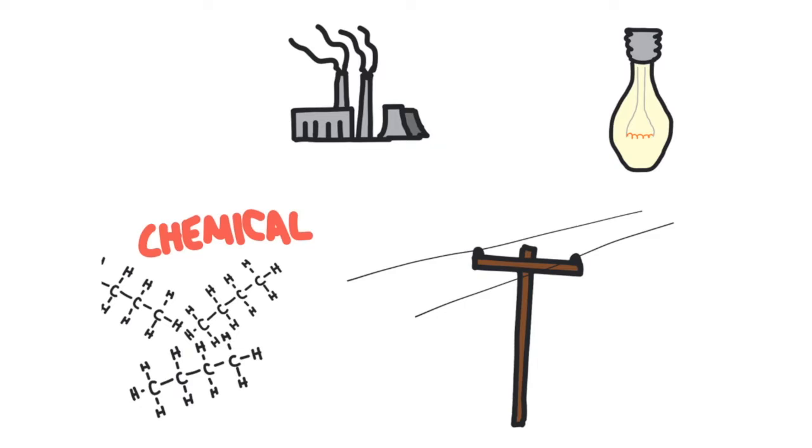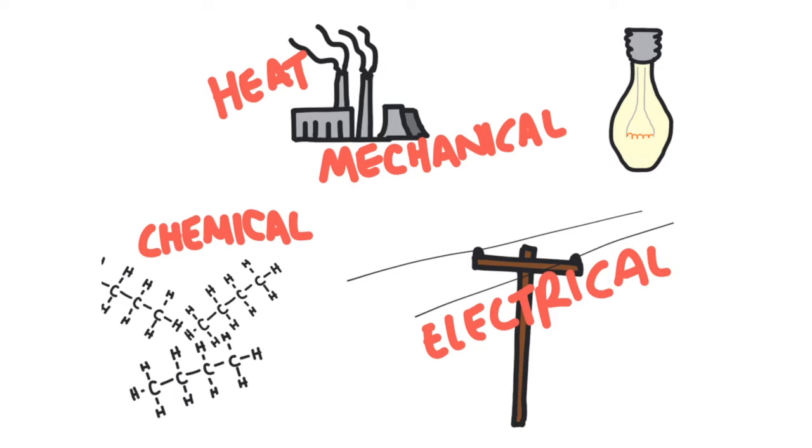Further down the line, those fossil fuels will be burned in a power plant to produce heat, which then is going to be used to produce mechanical energy to turn some turbines, which would then produce electrical energy which flows to your house where your light will turn on with light energy. This is the way that energy works—it's converted from one form into another form.